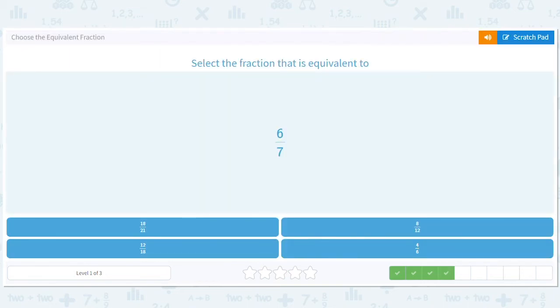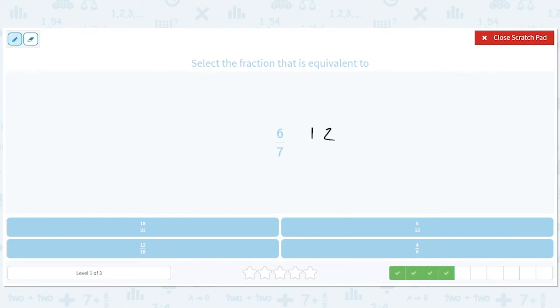6 out of 7. 6, 12, 18, 14, 21. Just multiplying by 1 and 2 and 3. The numerator and the denominator. So what do we see? 8 out of 21. Do we see that? Oh, we see 18 out of 21. Good. That's what we want. Not 8 out of 21.